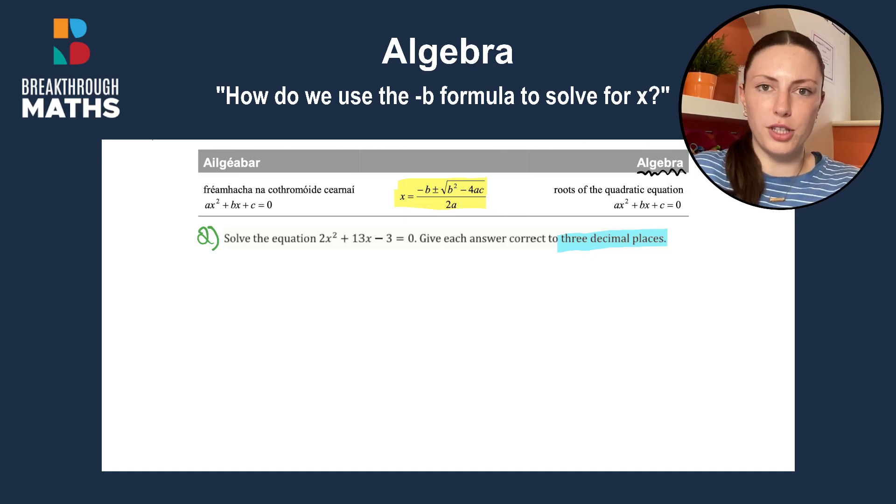So how do we know we have to use minus b formula here? Well, we're asked to solve and solve always means you need to find x. And also we have an x squared, an x and a number. And when you have an x squared, an x and a number, that's how you find a, b and c.